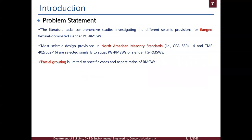Moving to the problem statement, the main issue is that the literature lacks comprehensive studies investigating the different seismic provisions for flanged, flexurally dominated, slender, partially grouted walls. In most North American masonry standards — mainly the CSA in Canada and the TMS in the US — design provisions are selected similar to squat partially grouted walls or slender fully grouted walls. Also, partial grouting is limited to specific cases and aspect ratios in CSA standards, meaning more work is needed for partially grouted walls in slender elements or tall structures.